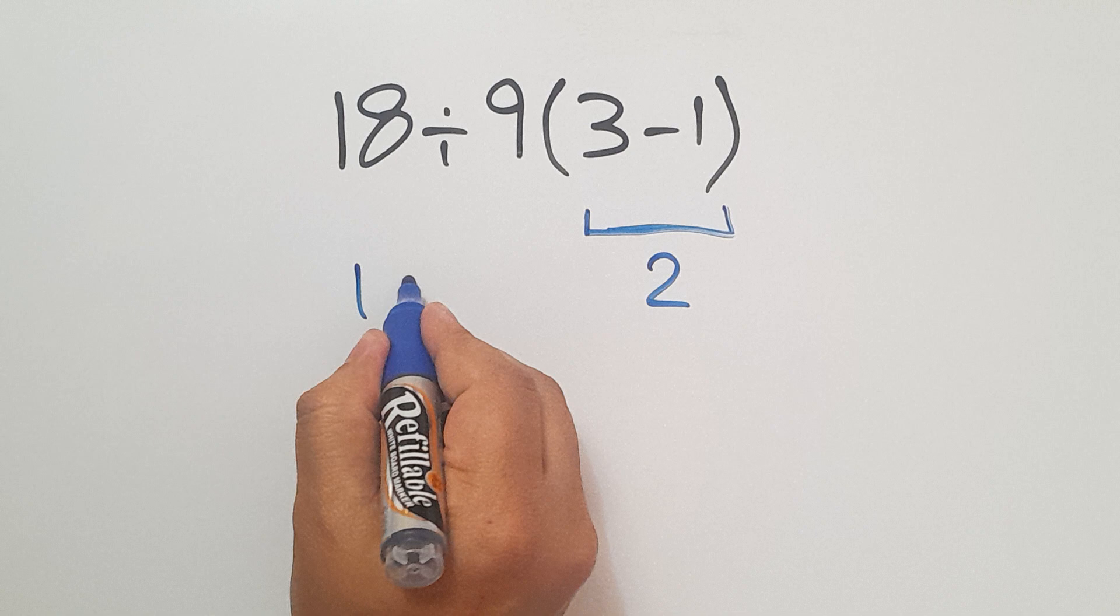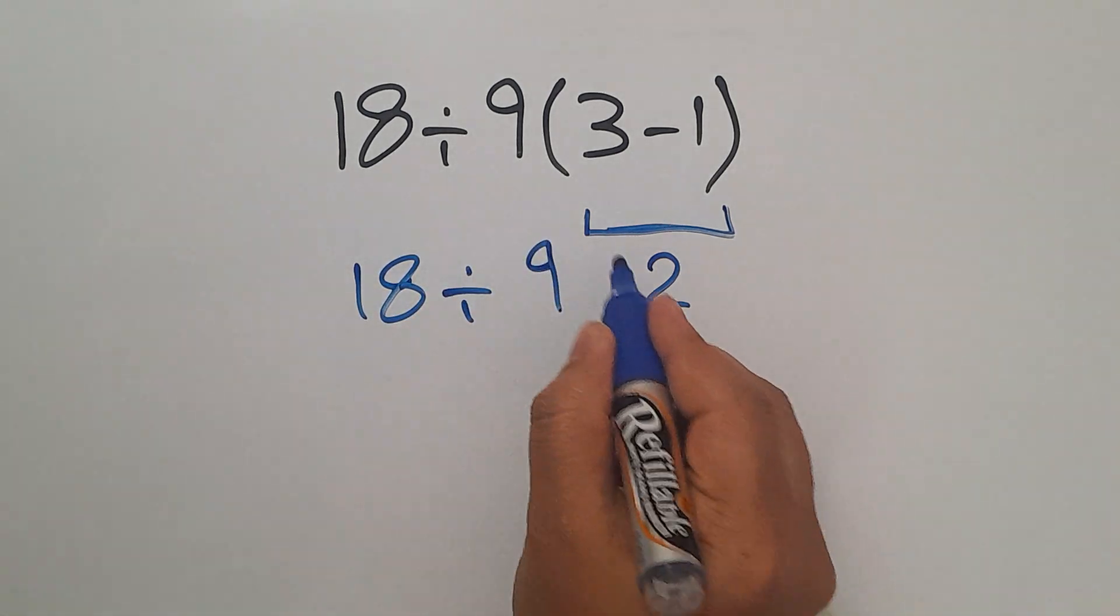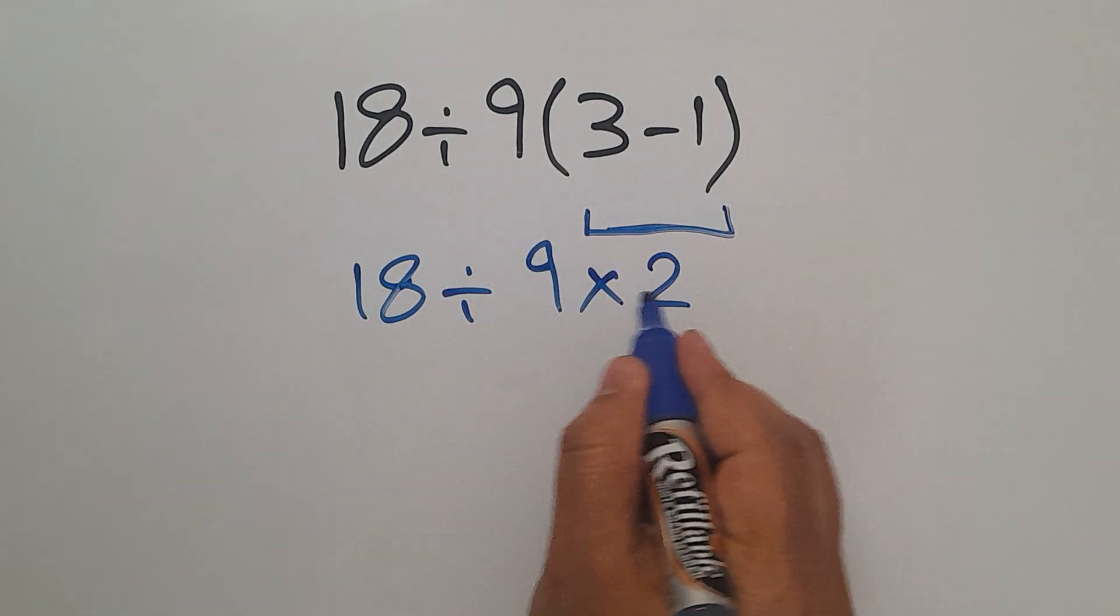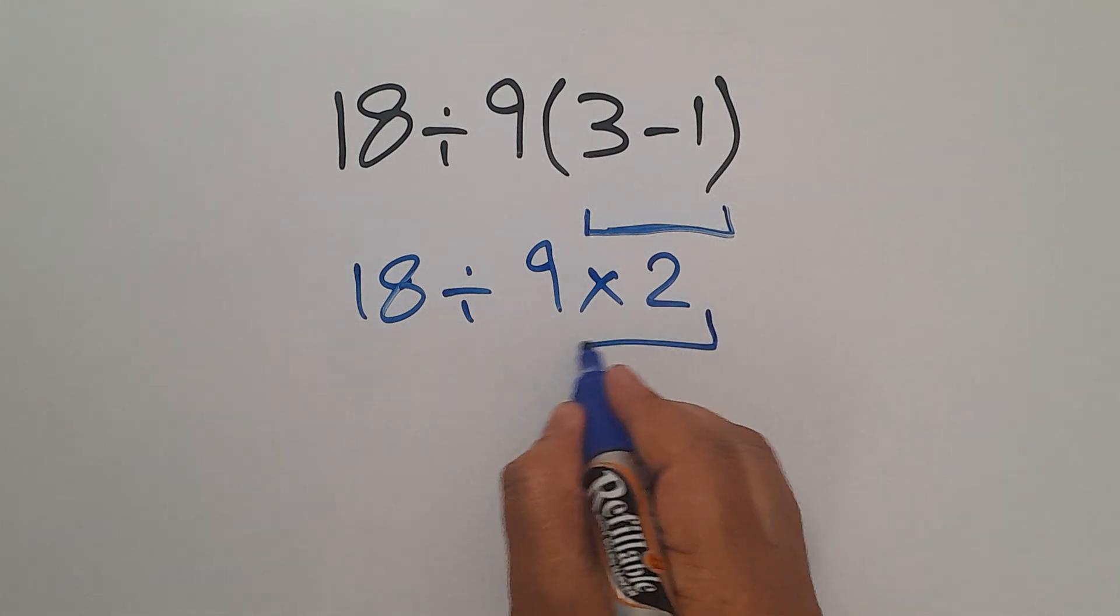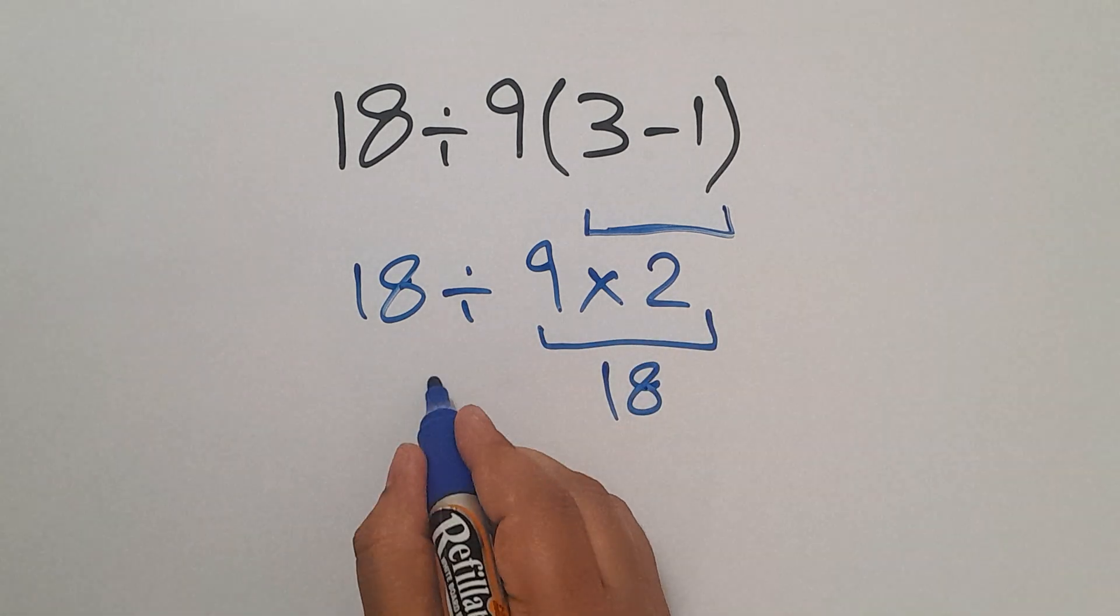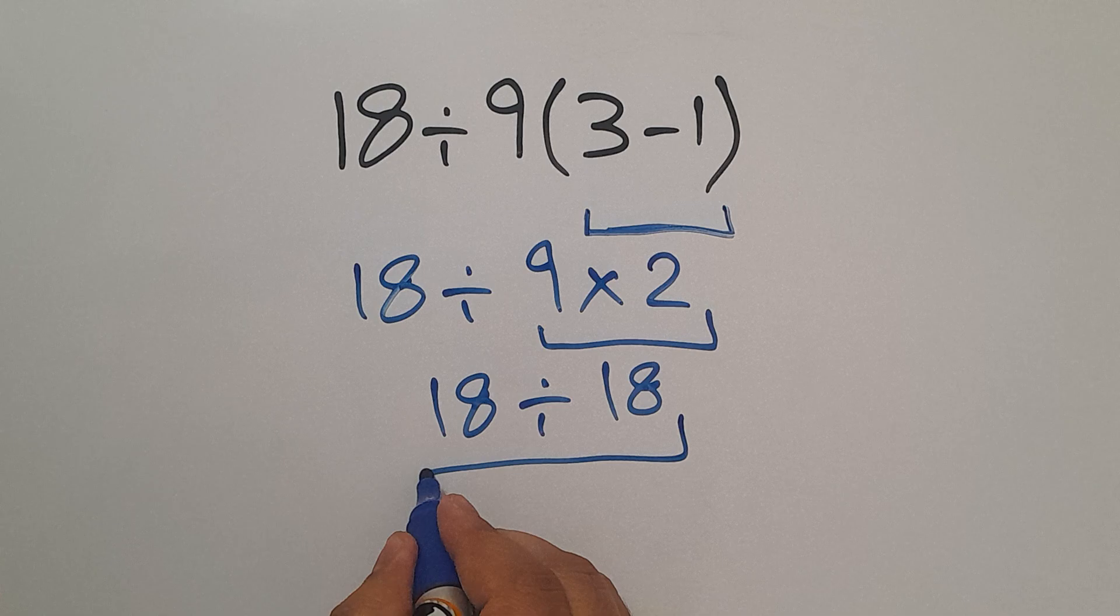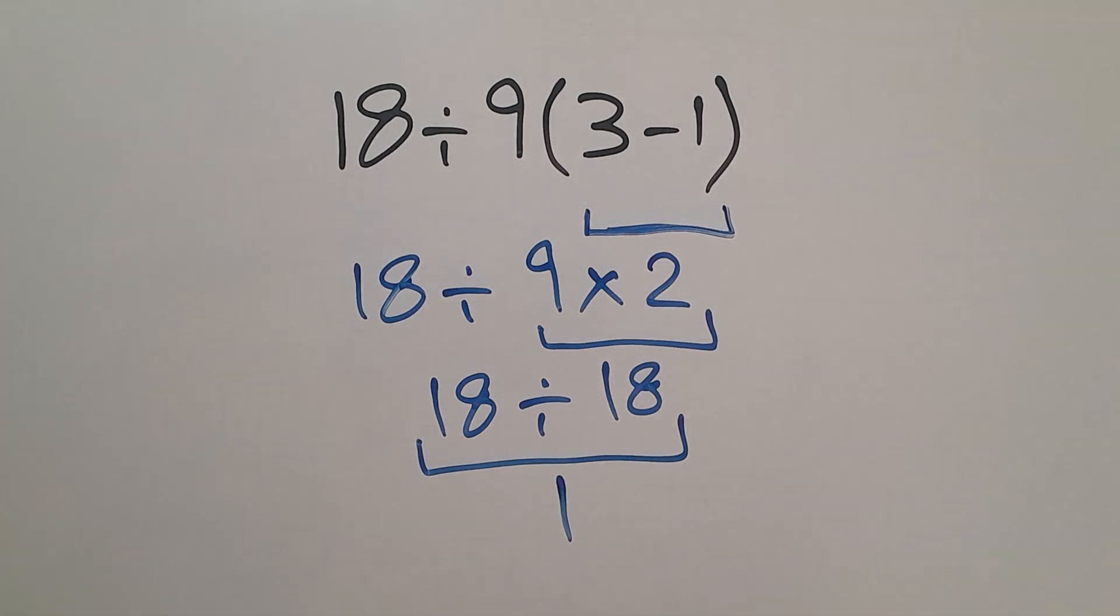Here we have 18 divided by 9, then times 2. 9 times 2 equals 18, and 18 divided by 18 equals 1. But this answer is not correct.